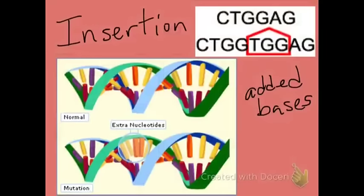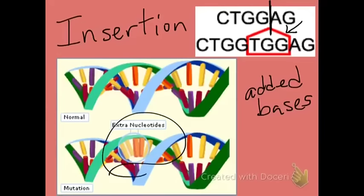This mutation is called an insertion mutation. Here you can see the TGG is added right in between the G and the A. You can see the extra nucleotides that are put into the DNA molecule, which would cause a mutation. So insertion adds bases.